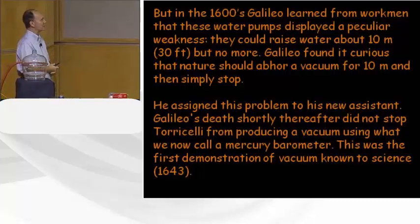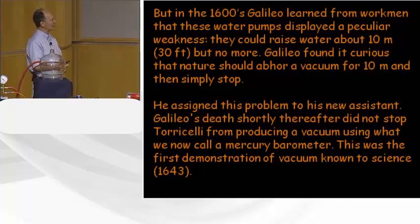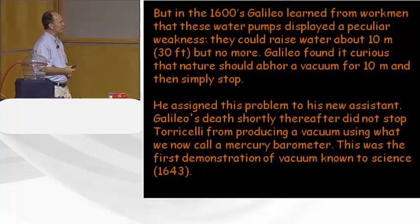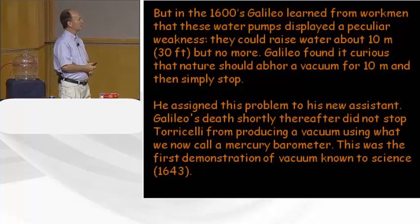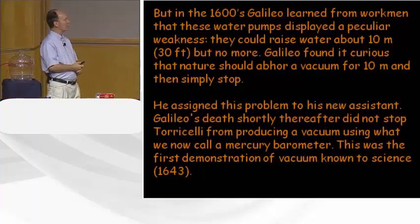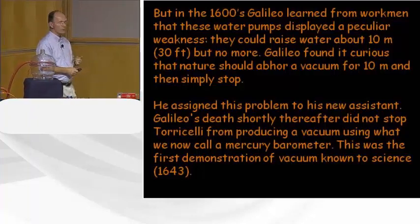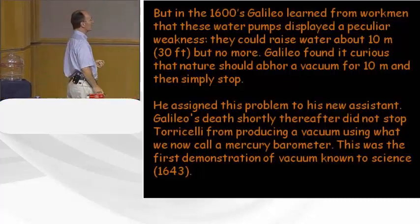Galileo assigned this problem to his new assistant, but unfortunately Galileo died very shortly thereafter. That did not stop his assistant, Torricelli, from producing a vacuum using what we now call a mercury barometer. This was the first demonstration of vacuum known to science.